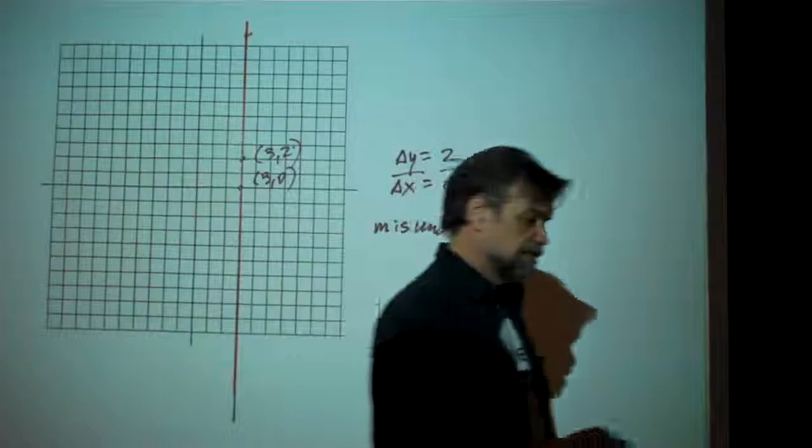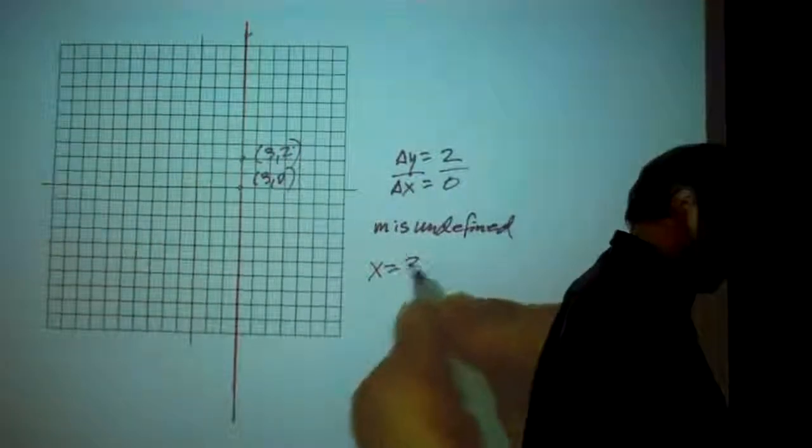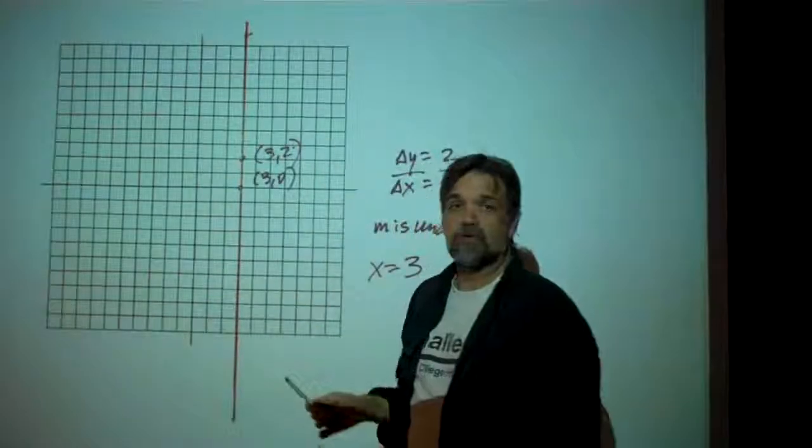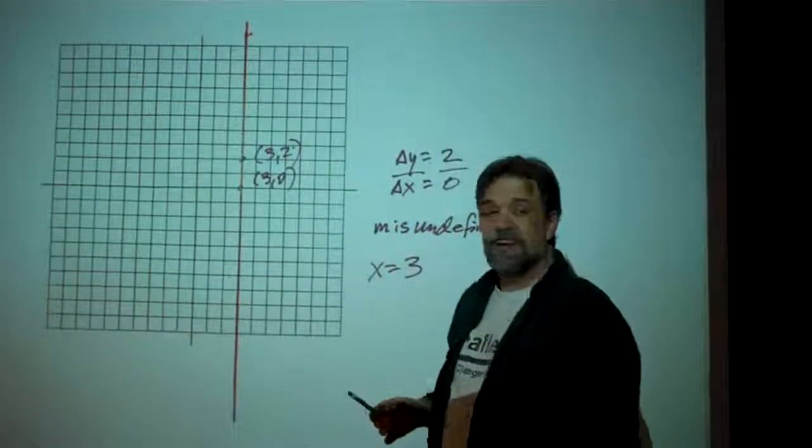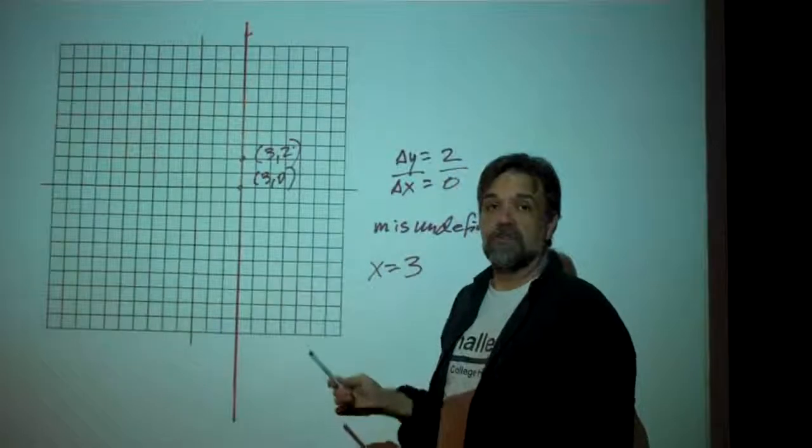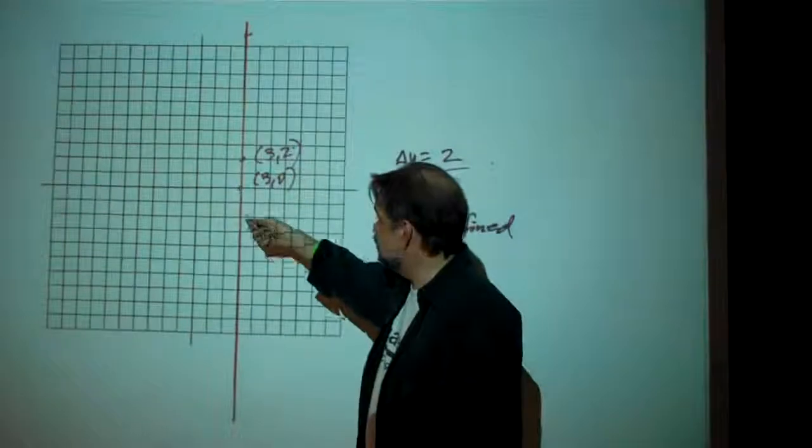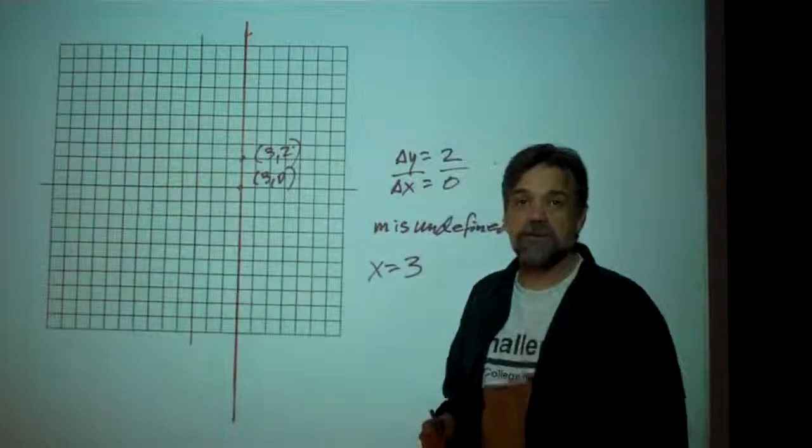There's your formula: x = 3. That's the equation for this vertical line here. And that's what the equation of any vertical line is going to look like: x equals a constant, and that constant being whatever the x-coordinate happens to be.